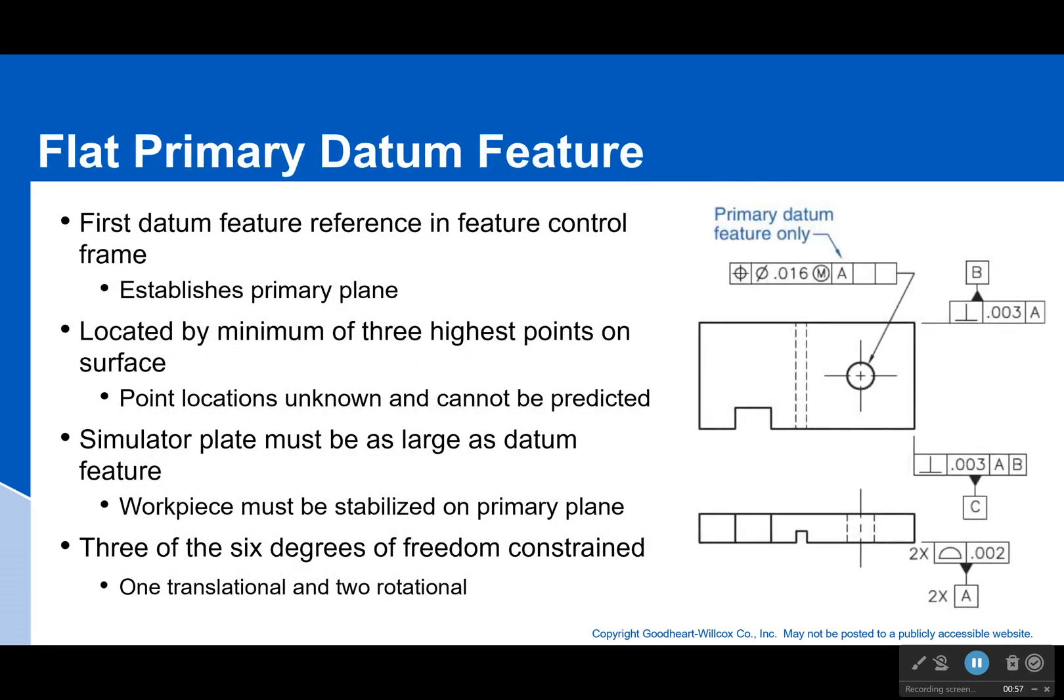Okay, so let's talk about some flat datum features. Now I mentioned this earlier, but if you have a flat primary datum feature, that would be our datum A. It's the very first one. You don't have to use A—I could use B as my first datum feature—but I'm just saying in this case it's A. Well then, a flat datum feature is located by the minimum of three highest points on that surface.